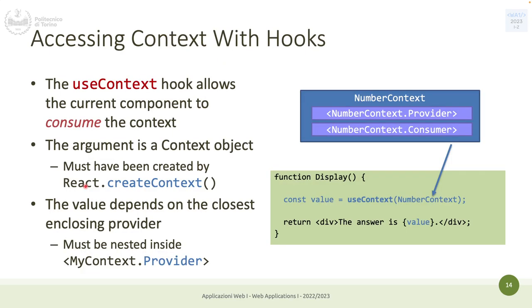An alternative way to consume the context is to use hooks, which is equivalent to the component way. You import useContext and call it with the context object — in this example NumberContext, in the previous example LanguageContext. You get the value directly as a variable and use it without a callback. The value is from the closest provider, because you can have multiple providers at different points of the application.